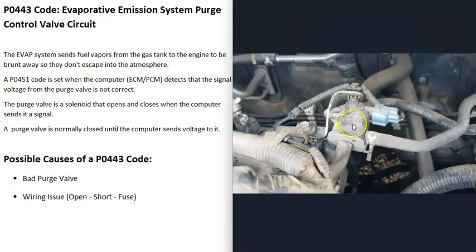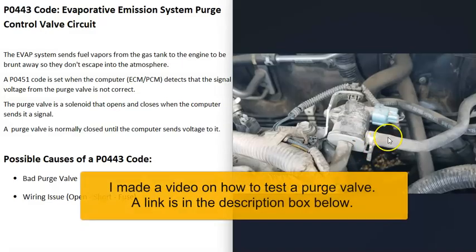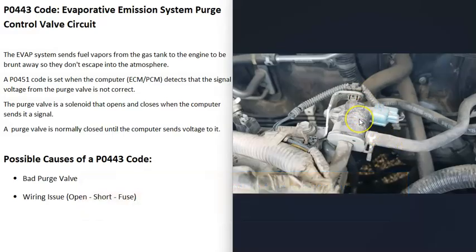Sometimes the purge valve will only have one hose going to it and the other side will be mounted directly to the engine. They have two ports — one coming from the charcoal canister and one going into the engine. These purge valves are normally closed, so when there's no power it shouldn't be open. One method to check if it's stuck open is to try to blow through it — if you can blow through it with no power, it's bad. Sometimes they get stuck closed, so another method is to remove the hose going back to the charcoal canister.